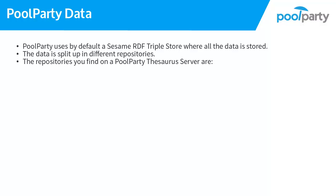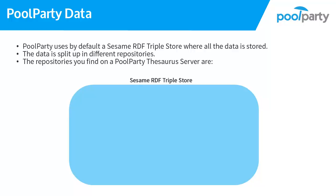When you use PoolParty, the data created is stored as triples in a Sesame RDF triple store. Depending on which data is created, this is stored in different repositories. You can see repositories like databases in a relational database system.